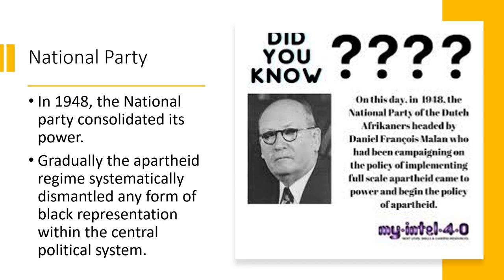Through a series of steps, the government ensured the exclusion of black individuals from political participation. In 1956, after a long political and legal struggle, it dealt the colored voters in the Cape Province — most of whom had supported the United Party — the same blow as the Hertzog government had dealt African voters in 1936. It placed them on a separate roll and gave them the right to elect whites to represent them in parliament. Fourteen years later, it abolished the parliamentary seats of the white representatives for both Africans and the coloreds.